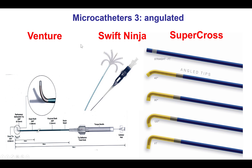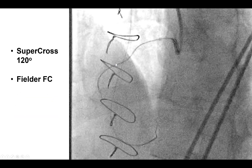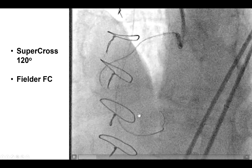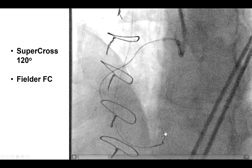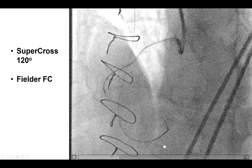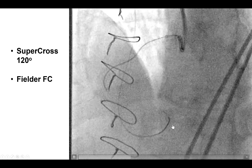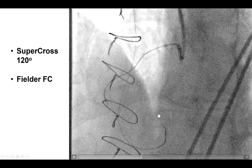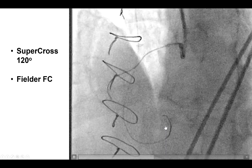These are the three currently available angulated microcatheters in the United States: the Venture, in which turning the knob at the back end turns the tip; the Supercross preformed microcatheter, with 120 degrees being the one most commonly used; and also the Swift Ninja. In this case, we did use a Supercross 120. It was still challenging going retrograde, but eventually we were able to make some progress using a Fiedler FC polymer-jacketed guide wire.